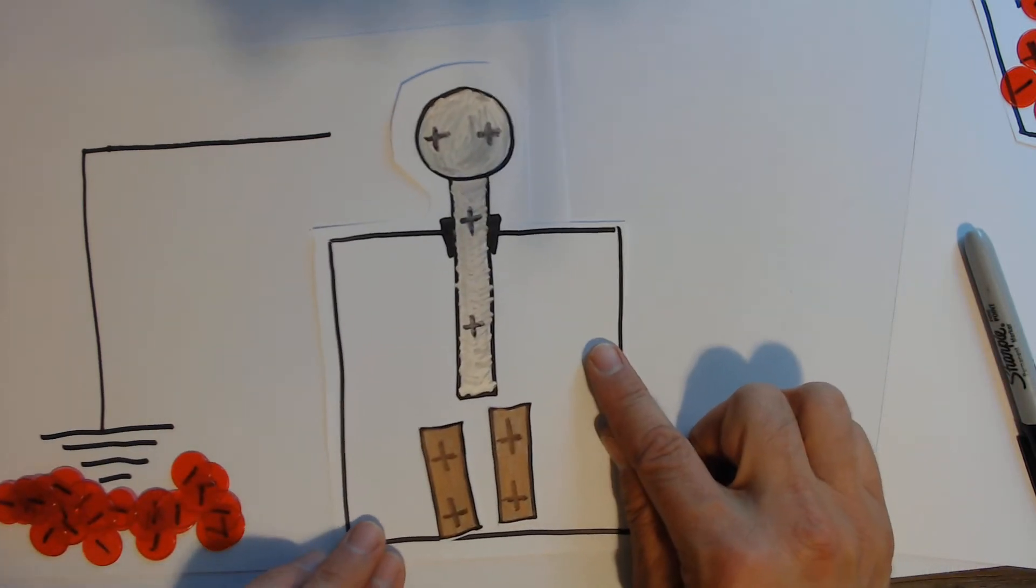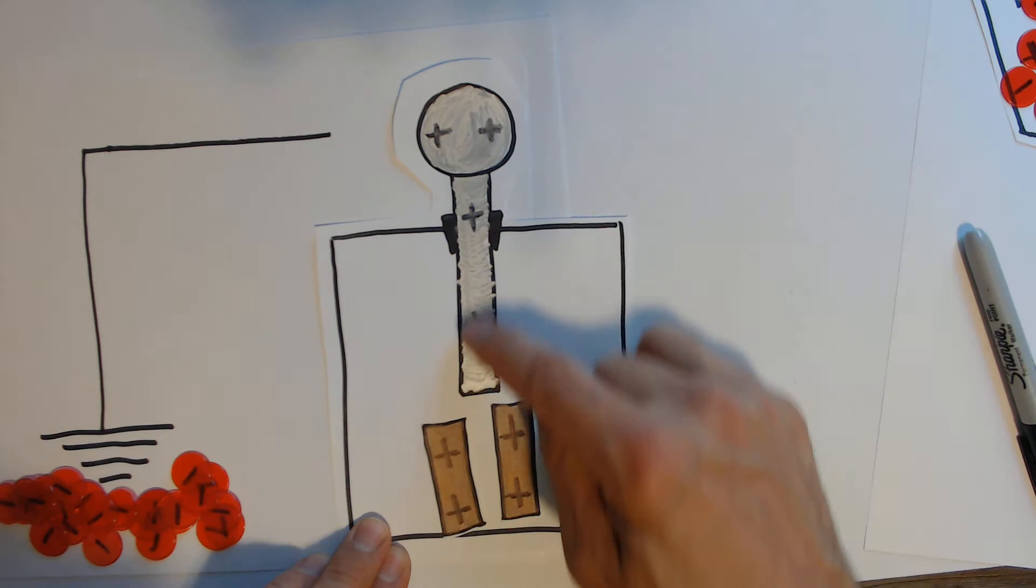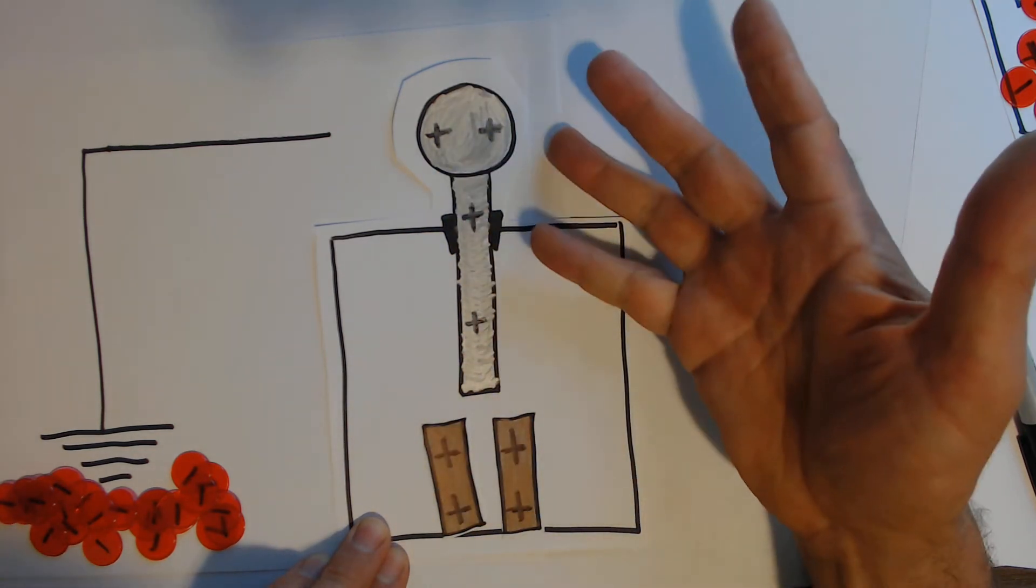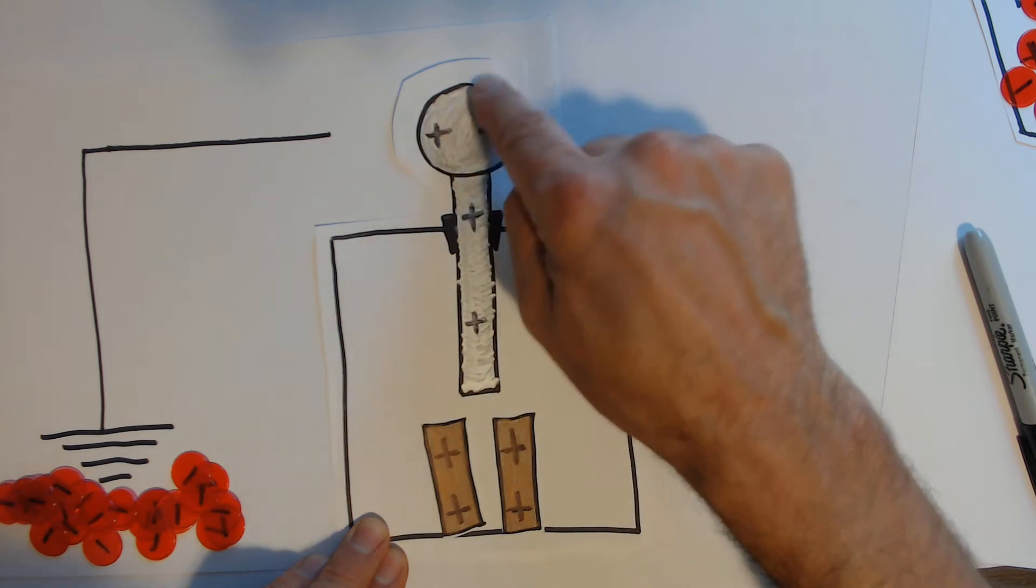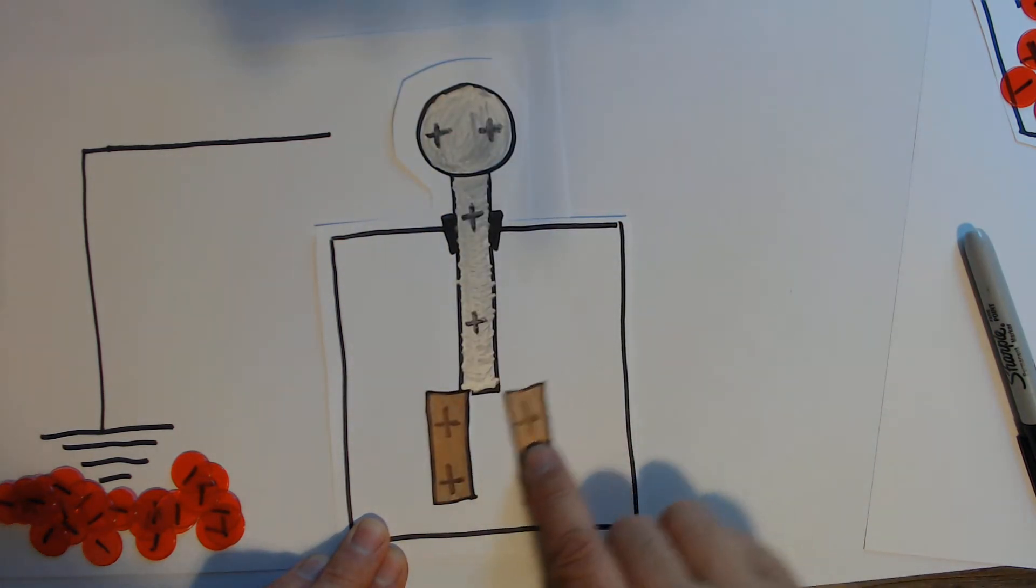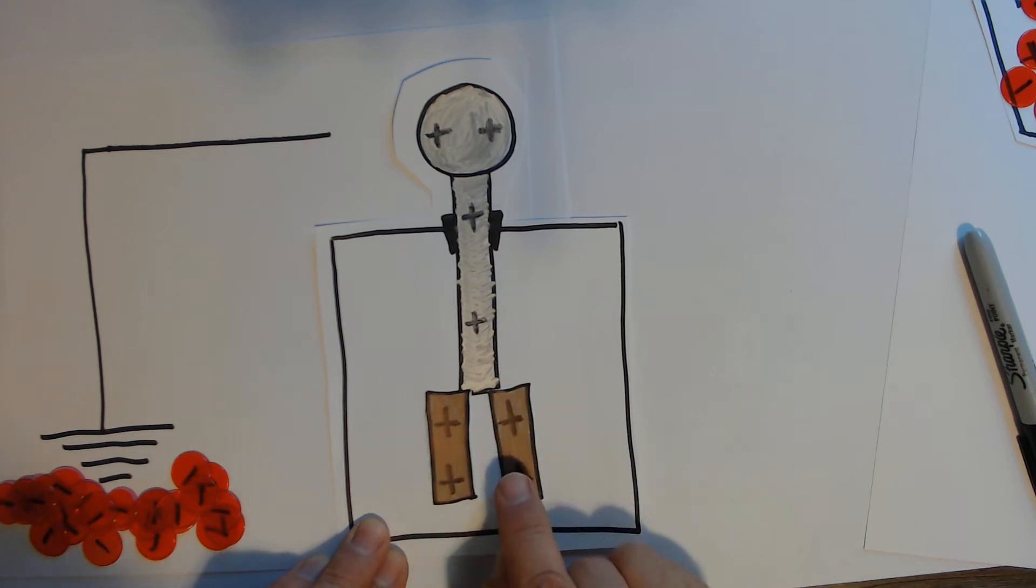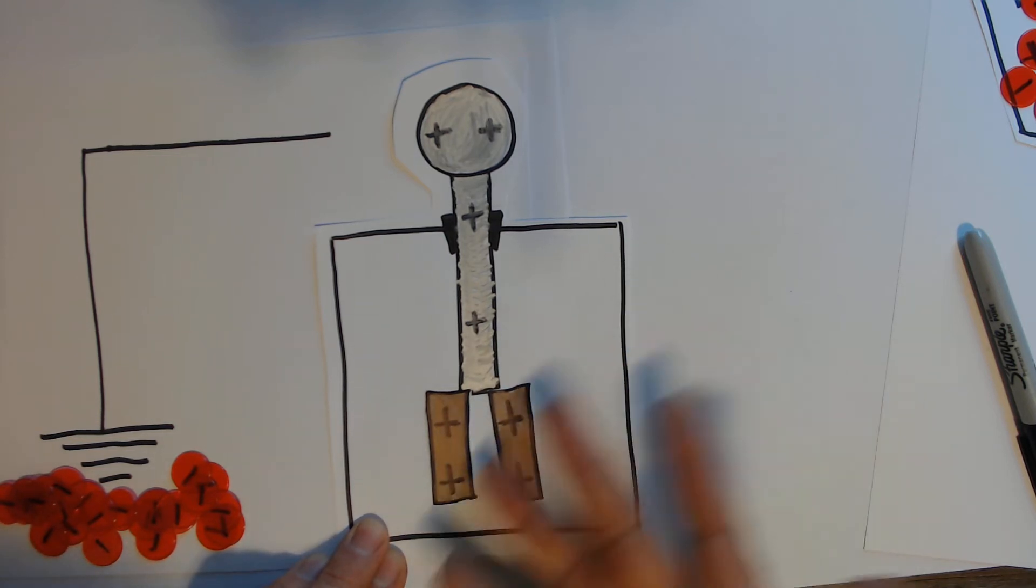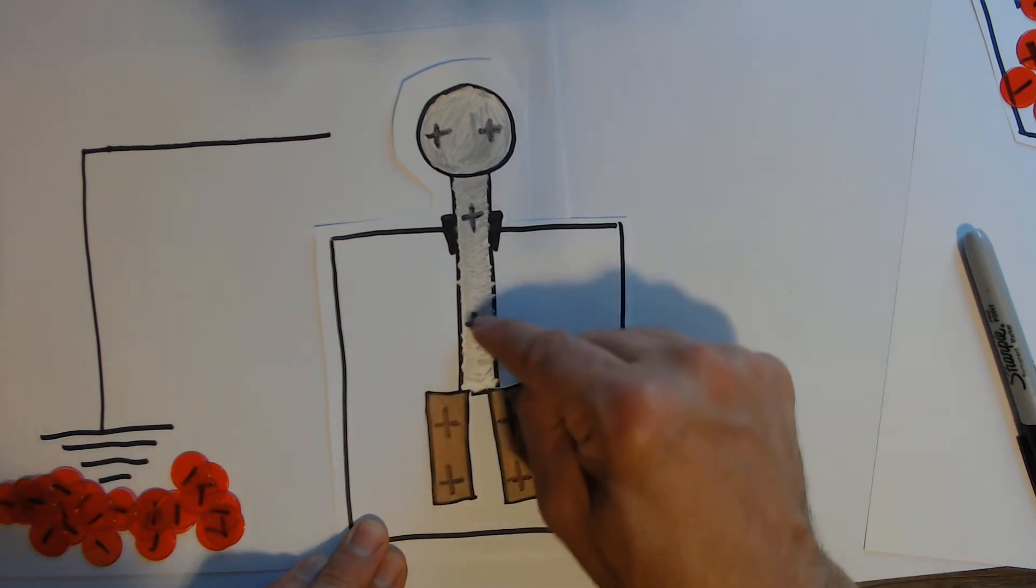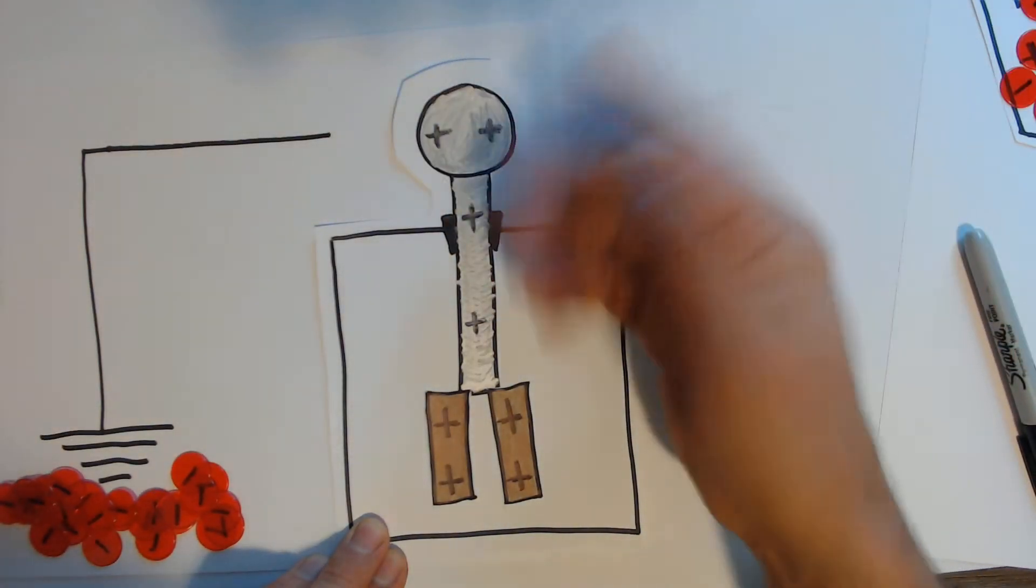Now the electroscope, what I've done is I've drawn in silver and in gold the parts that are conductors. So here is the ball, the rod, and the two gold foil strips that hang at the bottom. They're very light. I draw them thick so you can see the charges, and it has one, two, three, four, five, six, seven, eight pluses as normal.